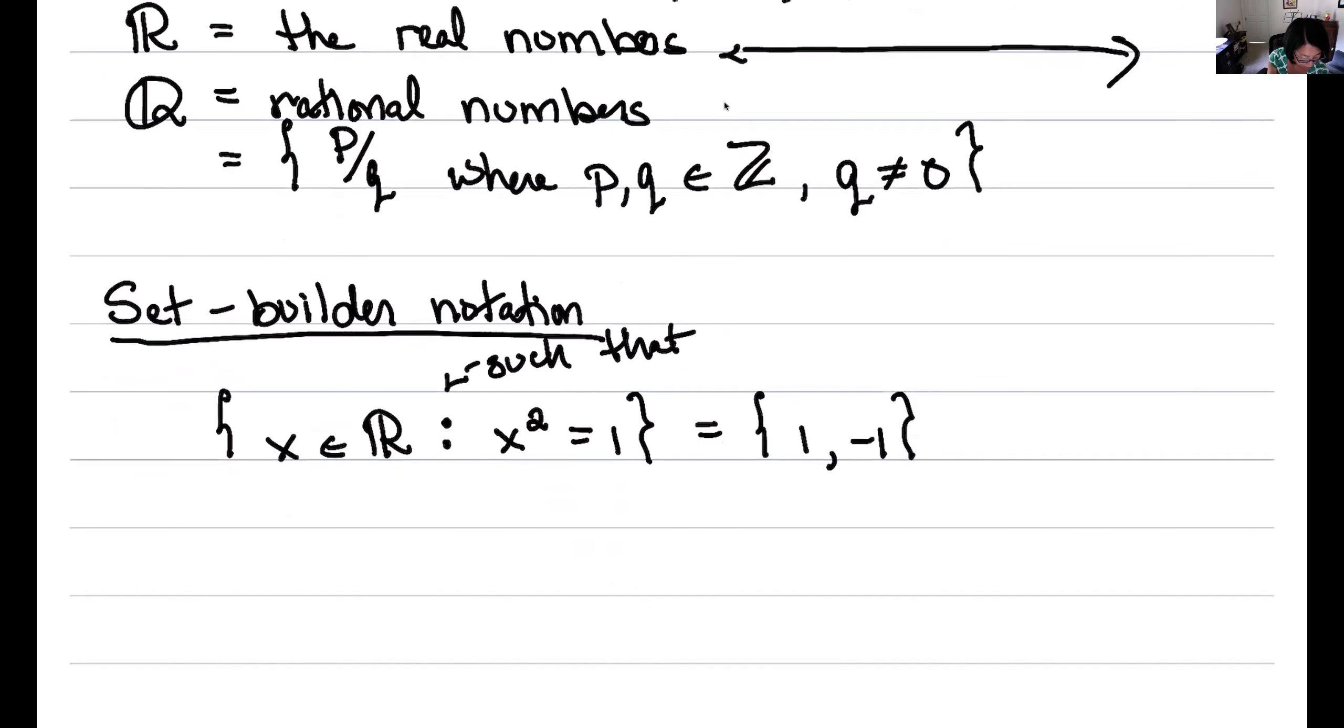But I could also say something like the natural numbers are the set of all m in ℤ. So all the set of all m that are integers such that m is greater than zero. And so here I couldn't write every element of that set down. But that's a nice way of describing the natural numbers sort of without any words.